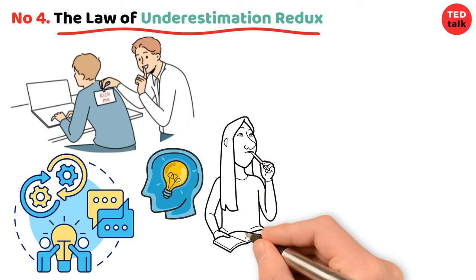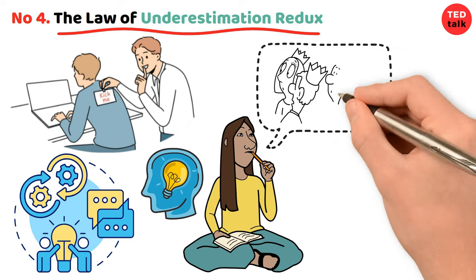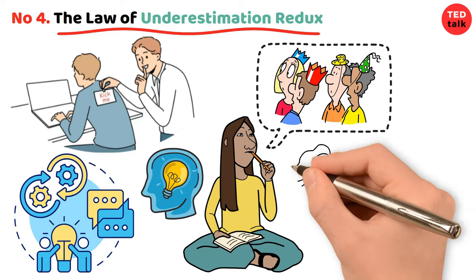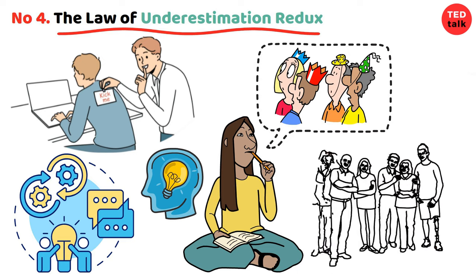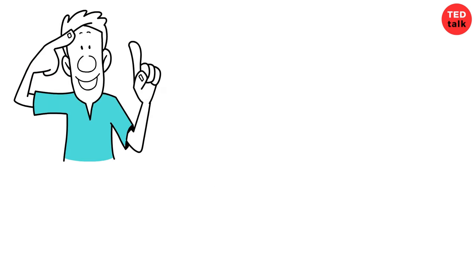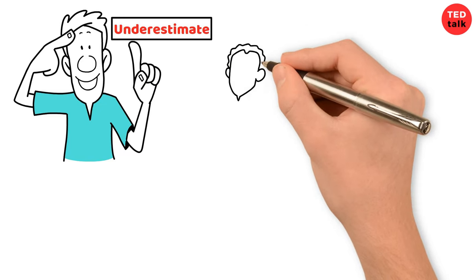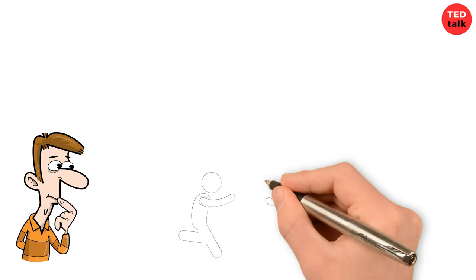One such revelation is the law of underestimation redux, a concept that delves into the depths of our perceptions and expectations. Imagine you're at a party surrounded by friends and laughter. Everyone seems pretty smart and sensible, right? Well, that's where Cipolla's law of underestimation redux comes into play. It says that smart folks often underestimate how much trouble silly people can cause.